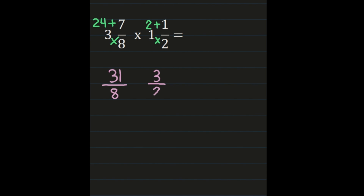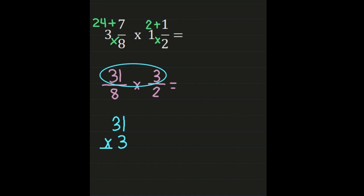Now I have the problem set up to multiply two fractions — numerator times numerator and denominator times denominator. We multiply 31 times 3. You can work this out on the side just like multiplying whole numbers: 3 times 1 is 3, and 3 times 3 is 9, so our numerator is 93.